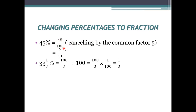Cancelling the common factor 5: 5 nines are 45 and 5 twenties are 100, so you get 9 by 20. Similarly, 33 and 1 by 3 percent means 100 by 3 divided by 100, which equals 100 by 3 times 1 by 100. The 100s cancel and you get 1 by 3.